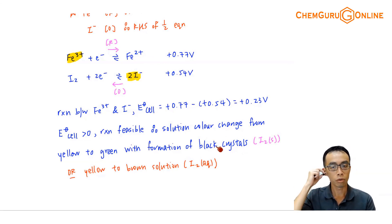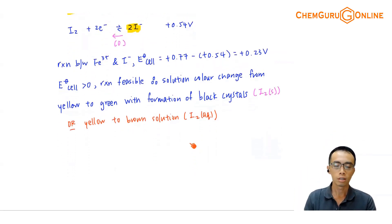As long as we can predict that this is a feasible reaction, then based on whatever product that is being formed, we can figure out the observation subsequently.